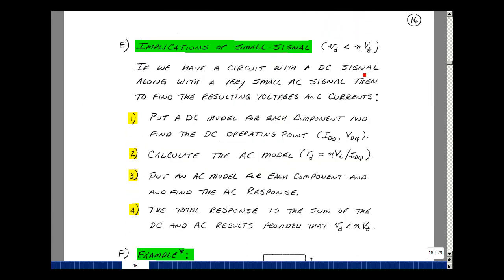If we have a circuit with a DC signal along with a very small AC signal, then the resulting voltages and currents can be found in the following way. We'll put a DC model in for each component and find the DC operating point, in other words the Q point. In our case for a diode, that's I_DQ and V_DQ. We'll then use that to calculate an AC model, and then we'll put an AC model in for each component of the circuit and find the AC response. And then if v_d is less than A times V_T, then we can simply add the two results together. Now this sounds like superposition, but it isn't. It's really the Taylor series expansion where we're throwing away the squared and cubed and terms that are higher powers.